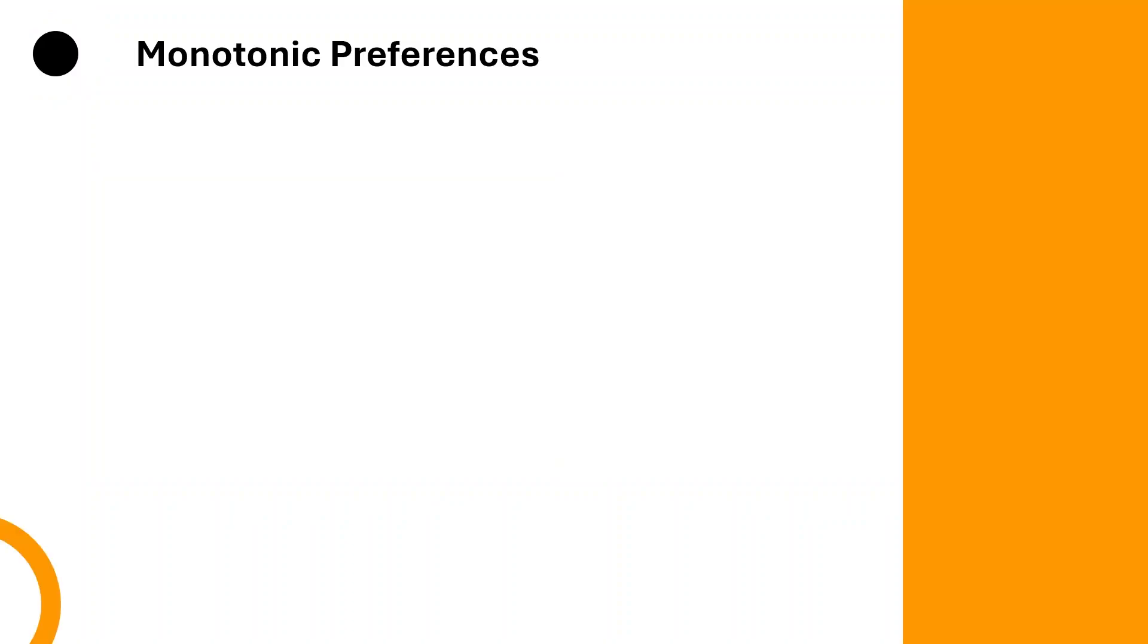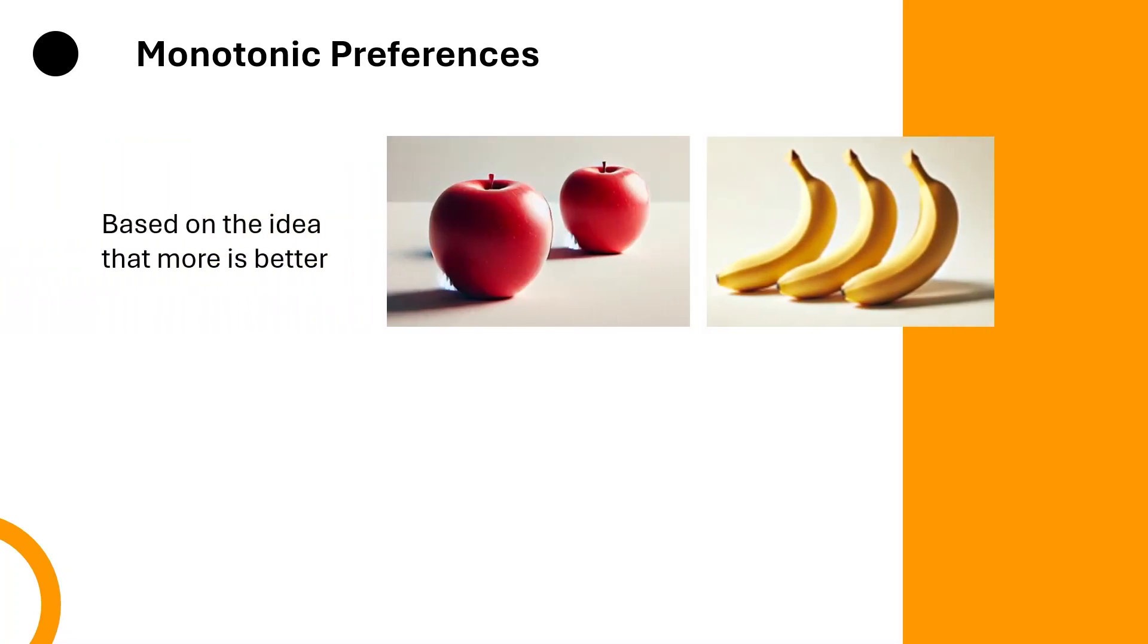Before we draw the curve, there is an important concept you need to know: monotonic preferences. This simply means that more is better.